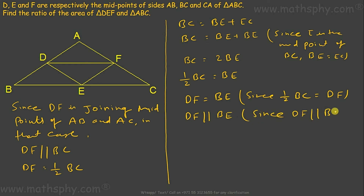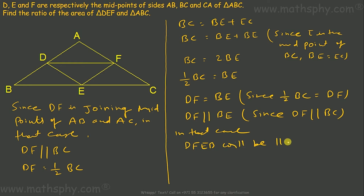If DF is parallel to BC, then DF is also parallel to BE. Since DF equals BE and DF is parallel to BE, quadrilateral DFEB is a parallelogram. The diagonal of a parallelogram splits its area into two equal parts, which gives us: area of triangle DEB equals area of triangle DEF.